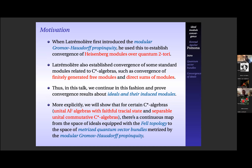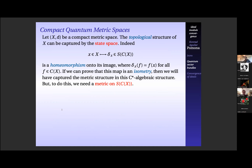We established two examples, showing that if ideals converge in the Fell topology, then their associated modules converge in the modular propinquity. The story begins with quantum metric spaces. We'll start there and introduce the Gromov-Hausdorff propinquity, which is the noncommutative analog of the Gromov-Hausdorff distance. I'll go into more detail and then state the main theorem about the modular propinquity and the main structures. The definition of the modular propinquity is quite involved, so I'll leave that as a reference.